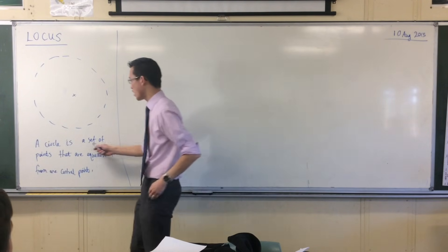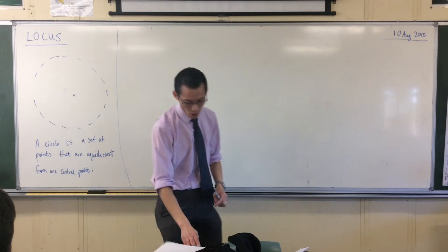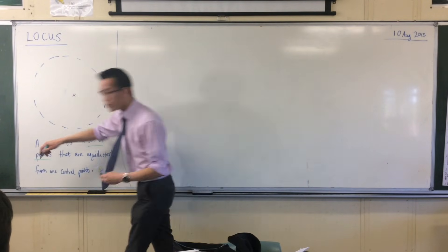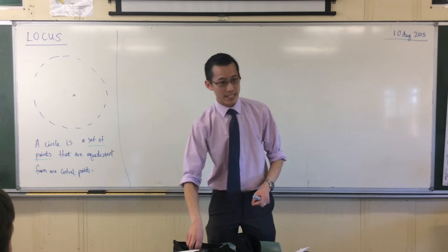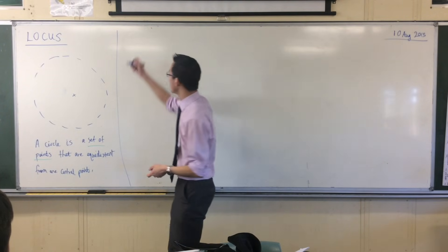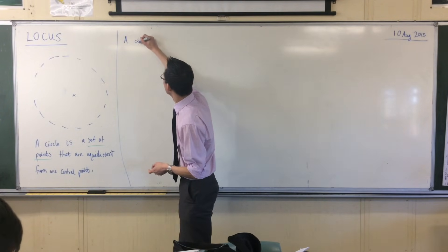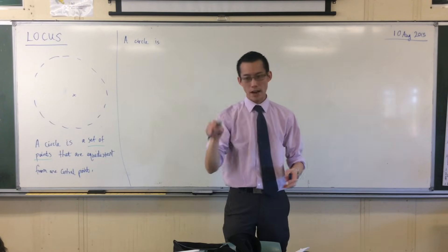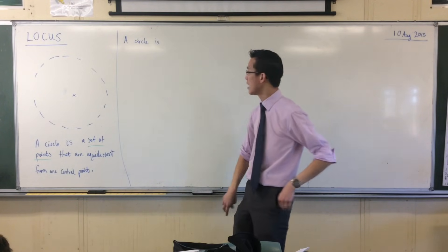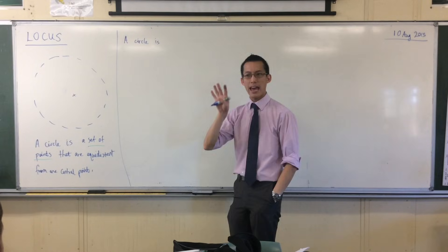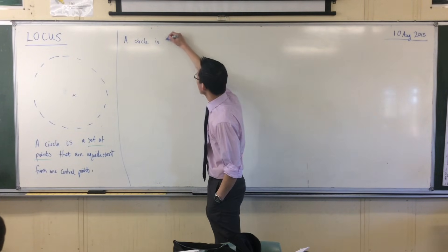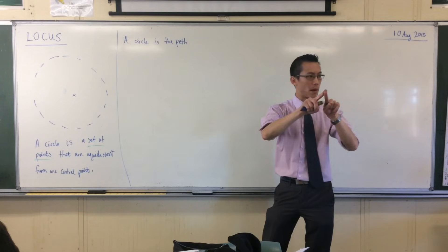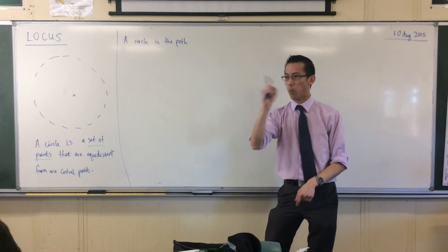Okay, so instead of saying it's a set of points, as in there's a whole bunch of them, and they're all doing the same thing, instead I want to say a circle is—rather than a set of points one, two, three, four, five, etc., all the way up to infinity—I want to say it's a path. A circle is the path that's traced out by one point that moves.